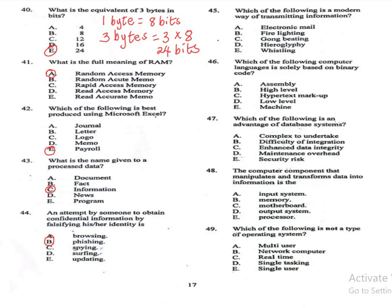Question 45: Which of the following is a modern way of transmitting information? A: electronic mail, B: fire lighting, C: gun beating, D: hieroglyphs, E: whistling. The correct answer is A, electronic mail. Question 46: Which of the following computer languages is solely based on binary code? A: assembly, B: high level, C: hypertext markup, D: low level, E: machine. The correct answer is E, machine. Machine language uses binary — zeros and ones — directly.